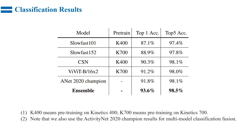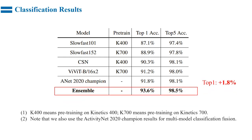Now we show the classification results. In the competition, we used SlowFast-101 pre-trained on Kinetics-400, SlowFast-152 pre-trained on Kinetics-700, CXN pre-trained on Kinetics-400, and YYT pre-trained on Kinetics-700. The ensemble results achieved 93.6%, which is 1.8% higher than last year. Note that we also used last year's champion results for multimodal classification fusion.